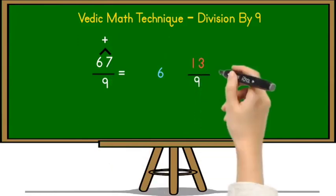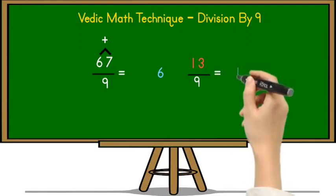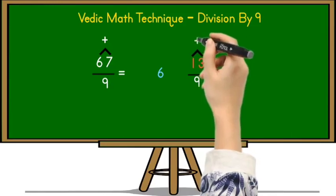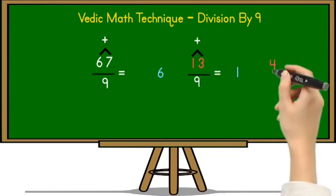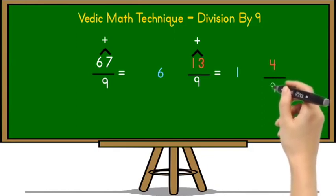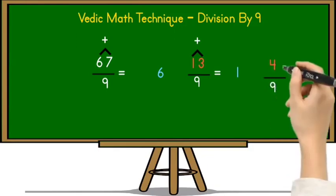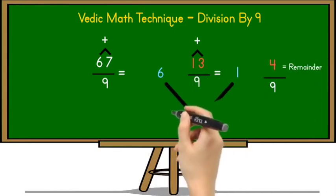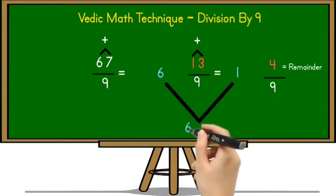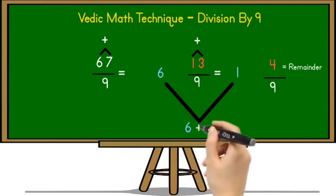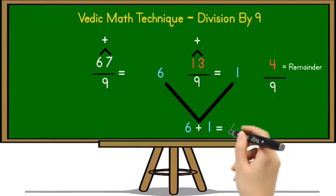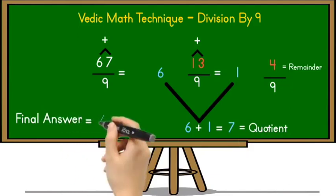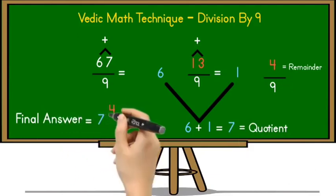Since 13 is greater than 9, we can divide again using the same strategy. Write down the 10th place digit 1, then add the unit and 10th place digits of 13 together: 1 plus 3 equals 4. Divide 4 by 9 — not possible because 4 is less than 9. So 4 is the remainder. To find the quotient, add 6 and 1 together: 6 plus 1 equals 7. So 7 is the quotient and 4 is the remainder. The final answer is 7 and 4/9.